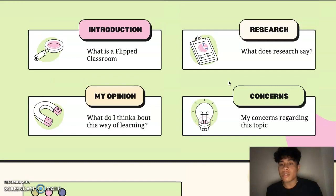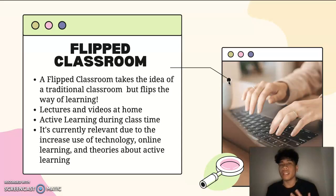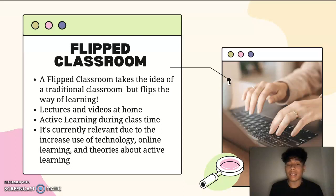So a flipped classroom takes the idea of a traditional classroom, but instead it flips it around. A flipped classroom will have lectures and videos that students will have to watch at home, and then active learning will be conducted during class time. For example, students will be doing projects, class activities, and discussions.